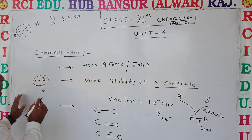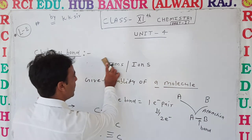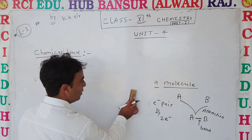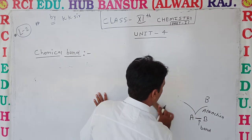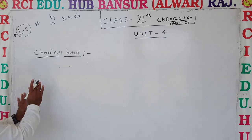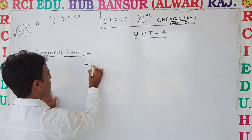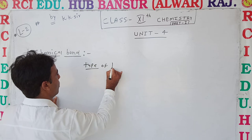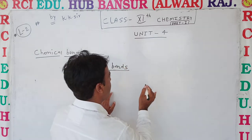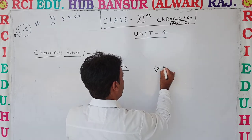Now we look at the types of bonds. The first types of bonds that are formed are sigma and pi bonds. Let's look at types of bonds.